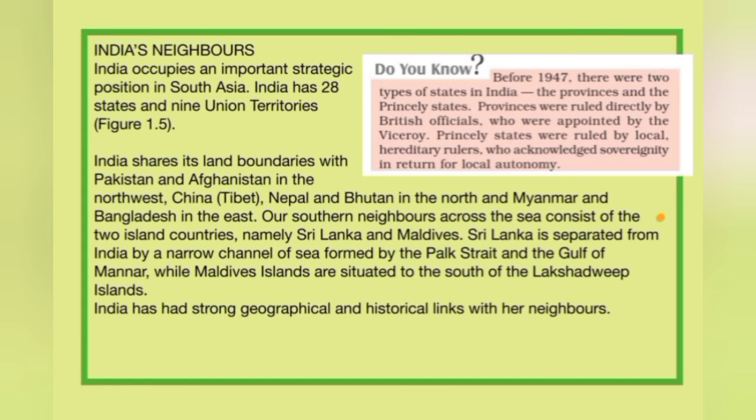India shares its land boundaries with Pakistan and Afghanistan in the north-west; China, Tibet, Nepal and Bhutan in the north; and Myanmar and Bangladesh in the east. Our southern neighbours across the sea are two island countries — Sri Lanka and Maldives. Sri Lanka is separated from India by a narrow channel of sea formed by Palk Strait and the Gulf of Mannar. The Maldive Islands are situated to the south of Lakshadweep Islands.